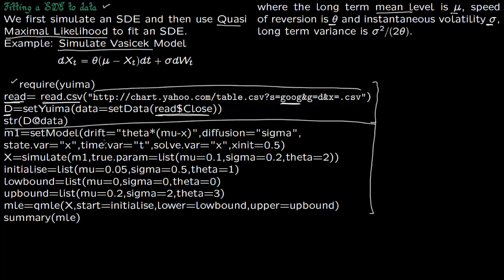So you're going to set the model as before. You have your drift theta times mu minus x, you have diffusion which is sigma, your state variable is x, time variable is t, and say initial value is 0.5. So you simulate this, so you have simulated this. Then before you fit, now this part is for fitting data.